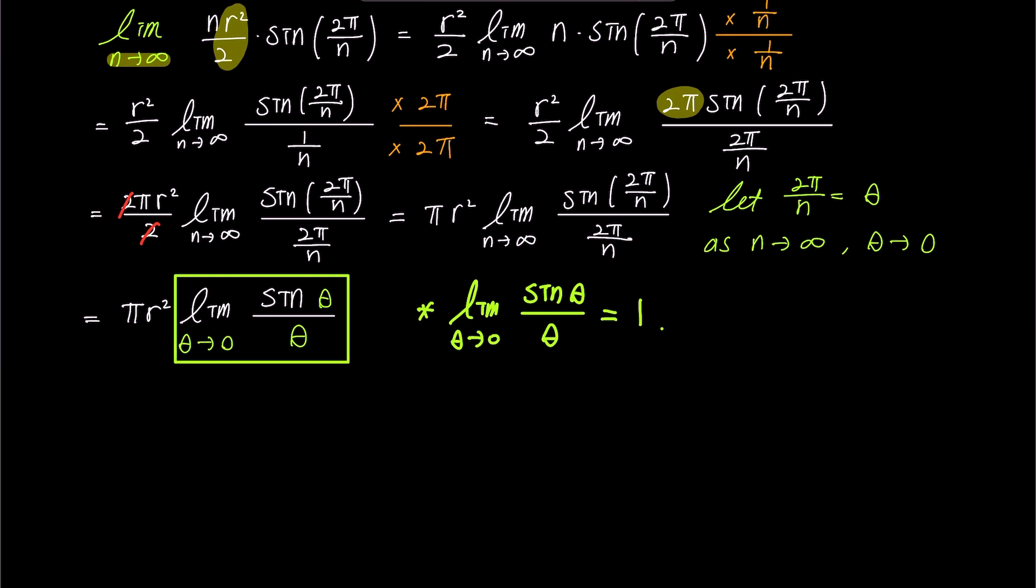Consequently, the expression simplifies to π times r squared. In conclusion, the area of a circle with radius r is π r squared.